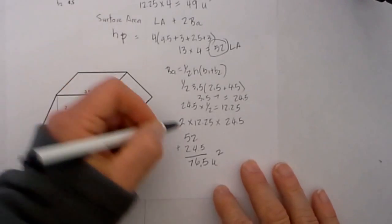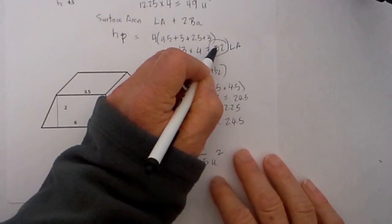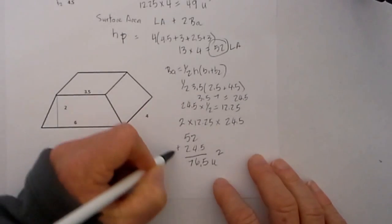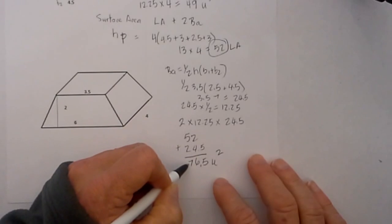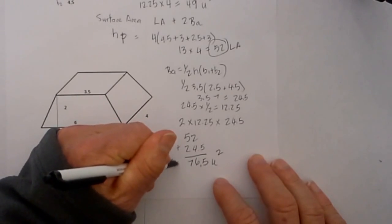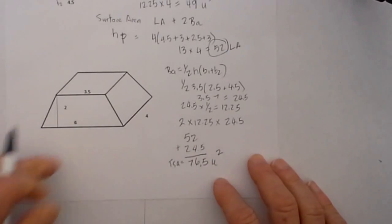Now that we have the base area, we are going to add that to the lateral area. So the lateral area is 52 and the base area is 24.5. When we add these together, the total surface area equals 76.5 units squared.